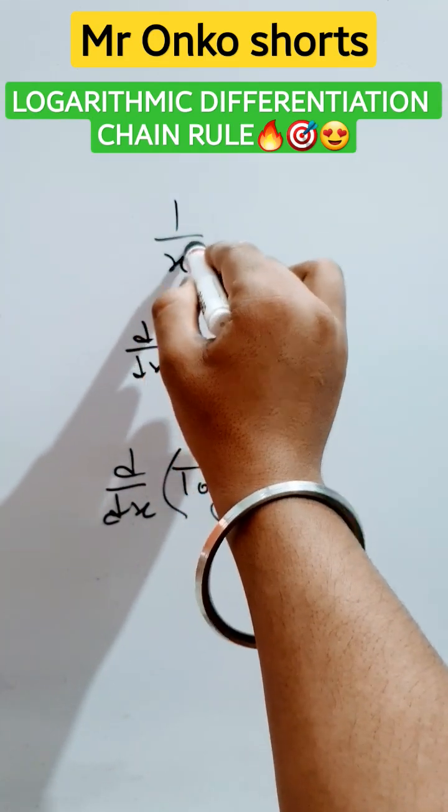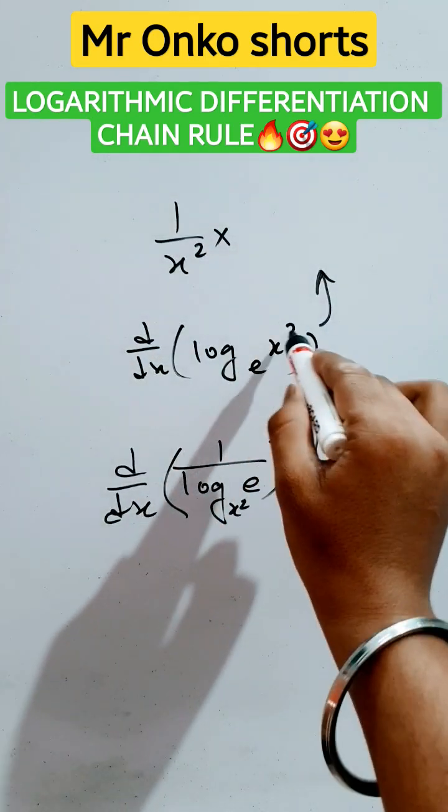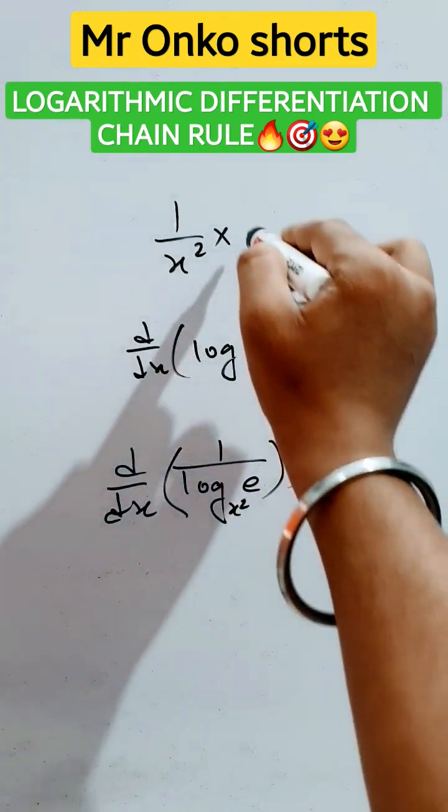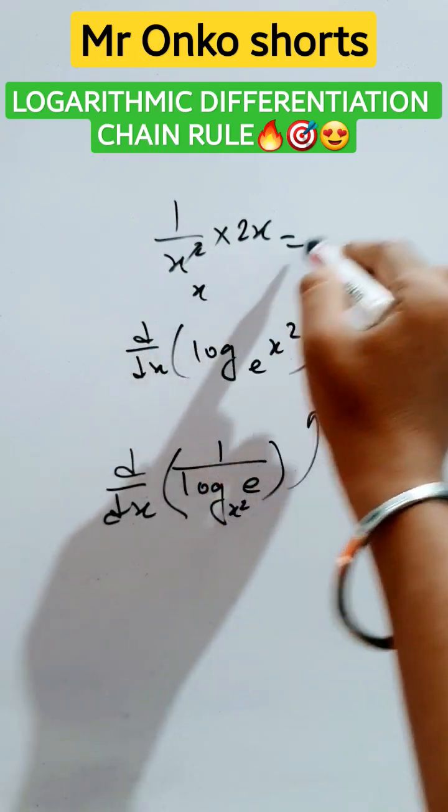Since this is not x but x squared, we apply the chain rule of differentiation. Differentiate x squared again, which gives 2x. So x times x will cancel, giving 2 by x. This is the answer of the given question.